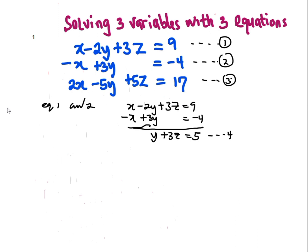Now, equation 1 and also equation 3 together. Rewriting these two equations, I'm going to have x minus 2y plus 3z equals 9. And also, I'm having 2x minus 5y plus 5z equals 17.